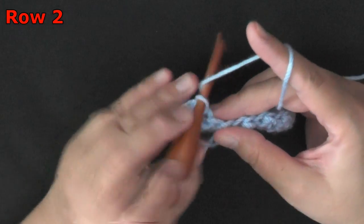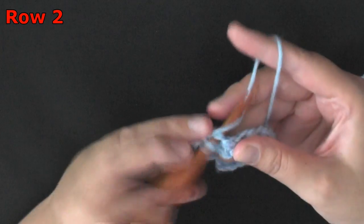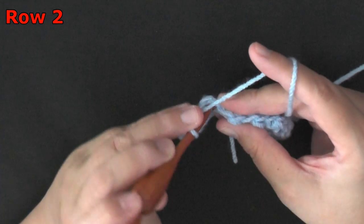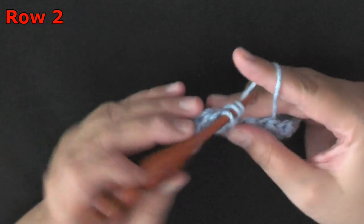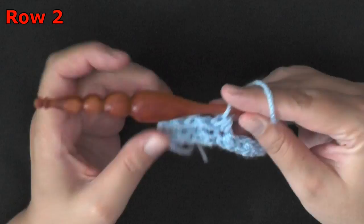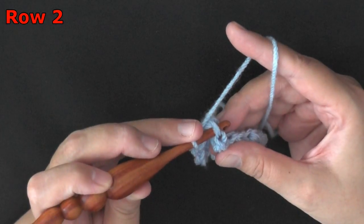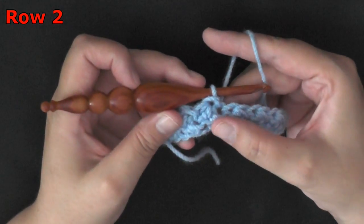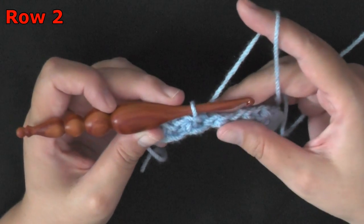So we just did a slip stitch, so now we're going to do a half double crochet. And then we're going to do a slip stitch. Then keep repeating that over and over again, half double crochet, slip stitch, being sure that you're going under the correct two loops of the stitch and not incorporating this front stitch that gets created every time you do a slip stitch.